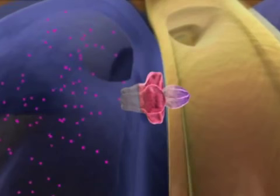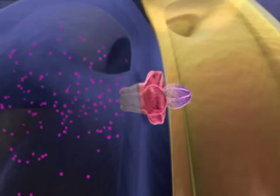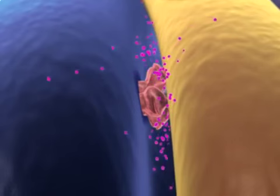The membranes of the T-tubule and terminal cisternae are linked by a series of proteins that control calcium release. As an action potential travels down the T-tubule, it causes a voltage-sensitive protein to change shape. This shape change opens a calcium release channel in the SR, allowing calcium ions to flood the sarcoplasm.